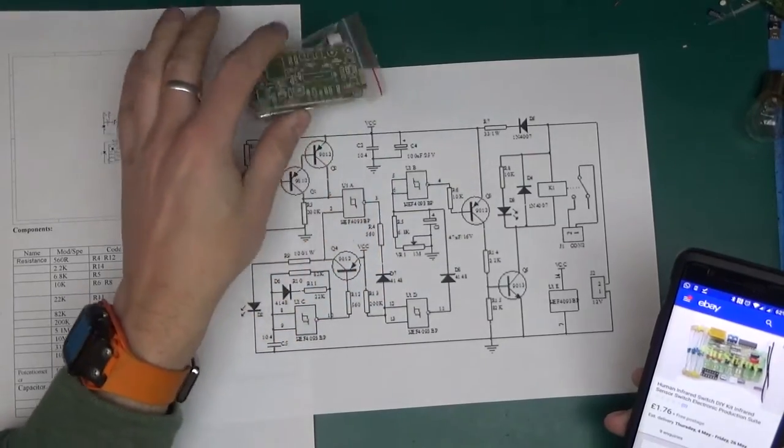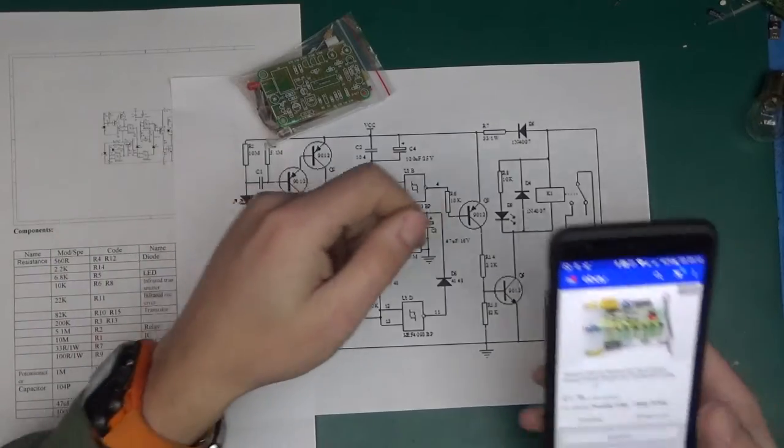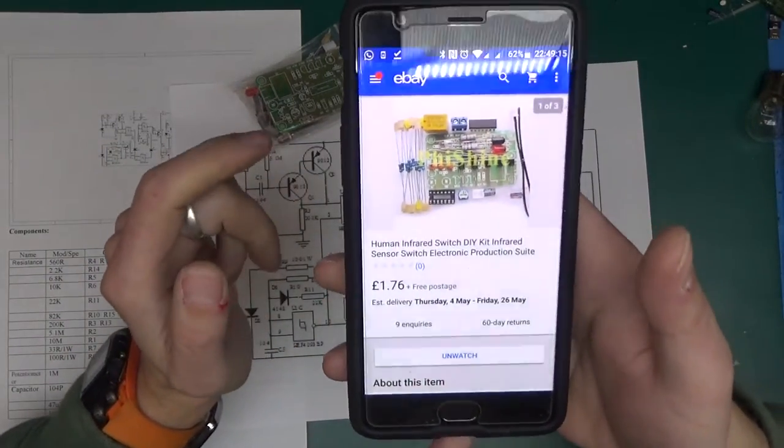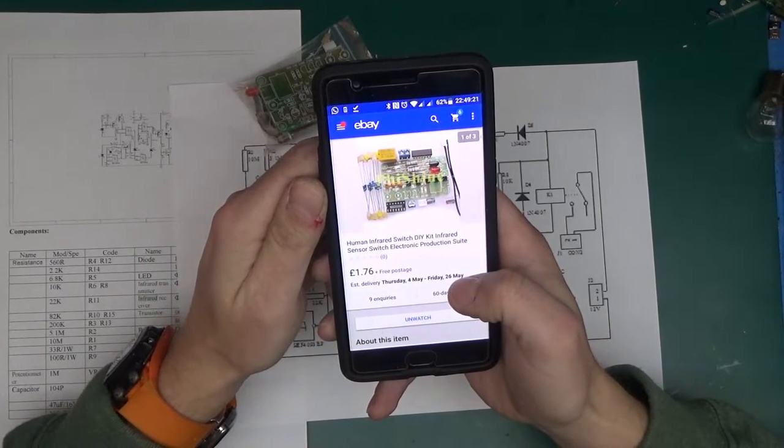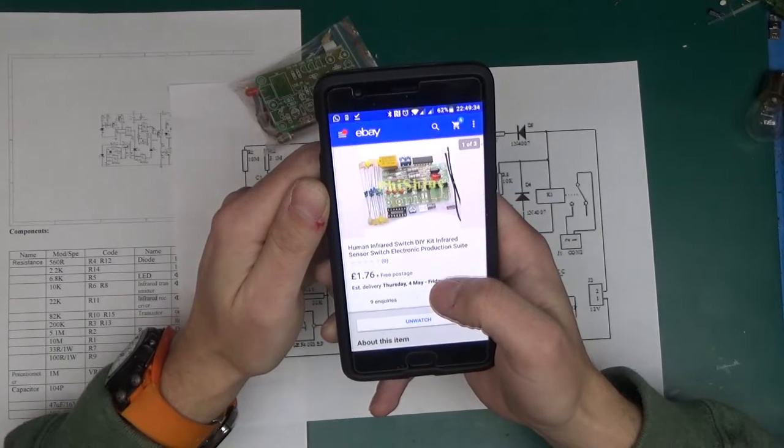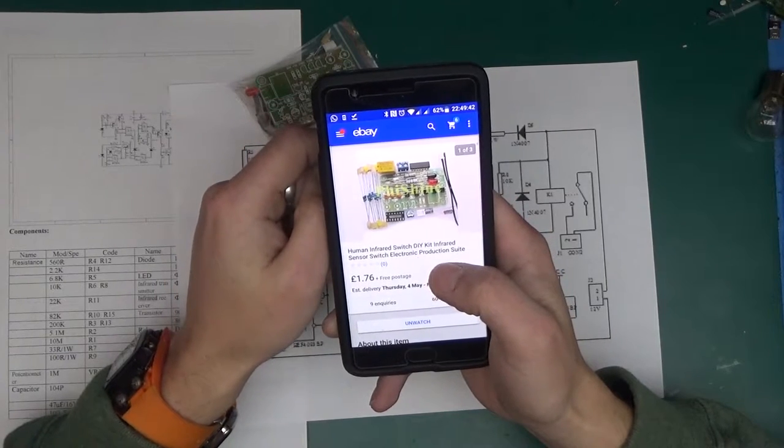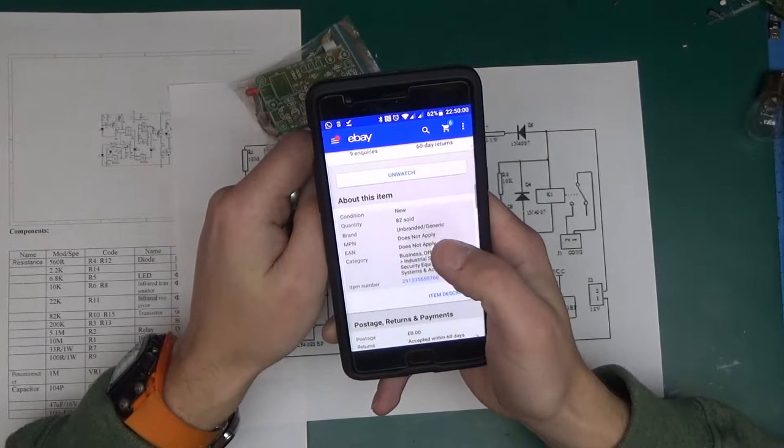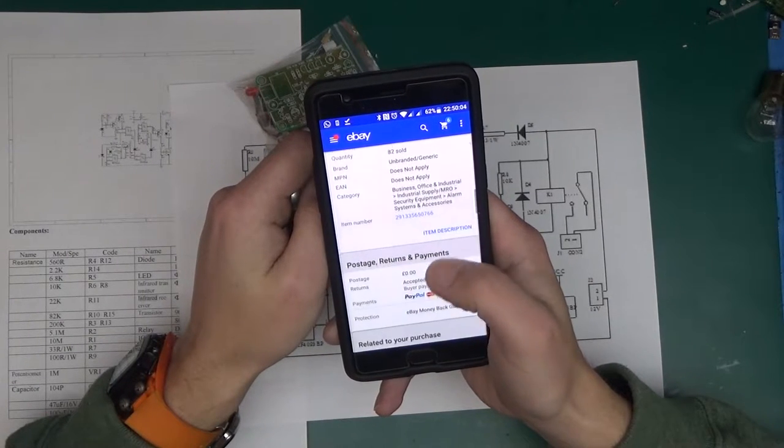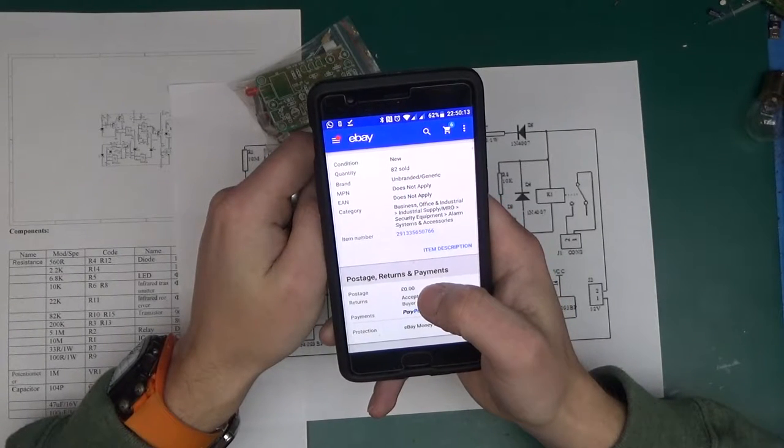Here is the bag of components and the schematic that I've printed out on a larger piece of paper so it's visible, but first things first let me show you where this came from. So it did come from eBay as I said and the cost for this was £1.76 which is very little. I've just looked up on Element 14 and the IC alone is 50 pence. I'm actually struggling to understand how they can make any business out of this. This came from seller 100FYS and the item number is 291-335-650766.